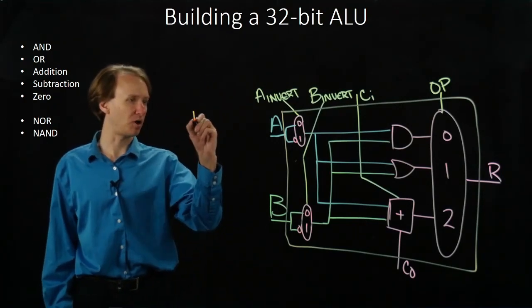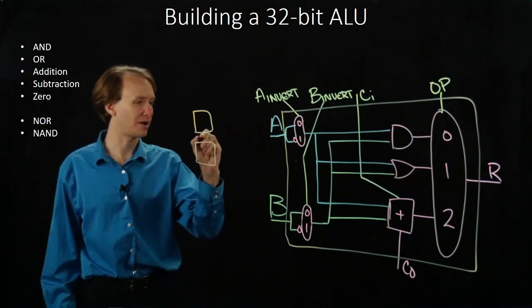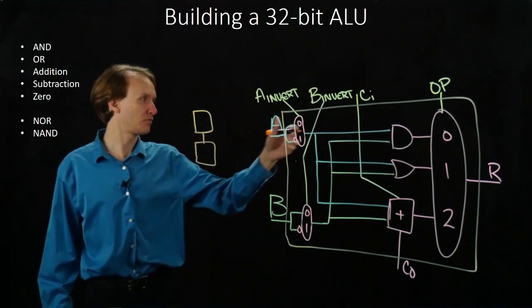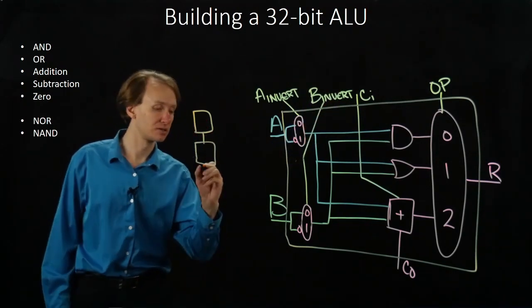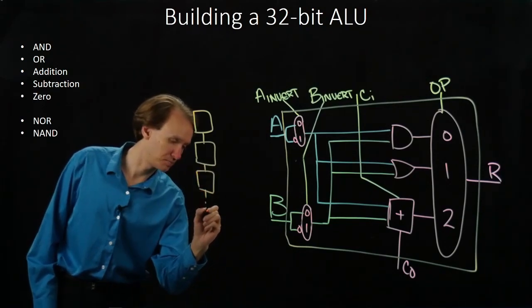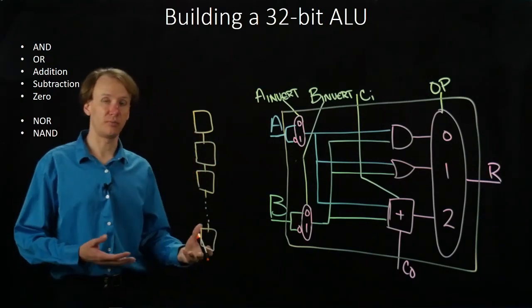If I take these boxes and I connect them kind of the way we've done before with our adders, where our carry out from the first one feeds in as the carry in to the next, then I could stack up 32 of these, which would enable me to do my addition.